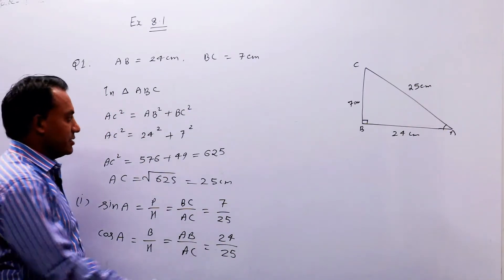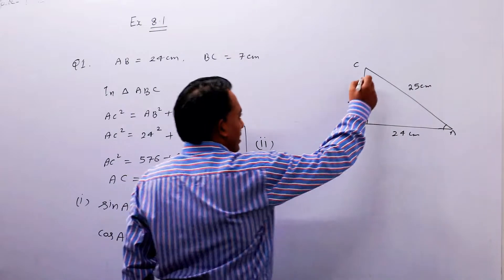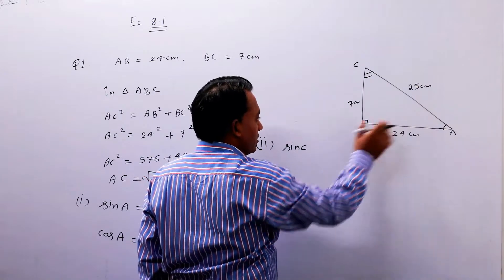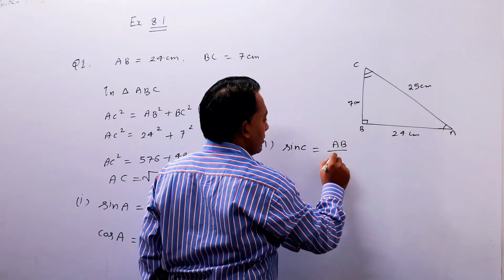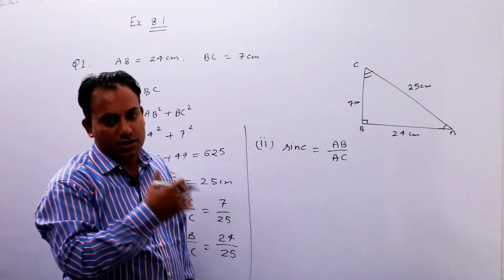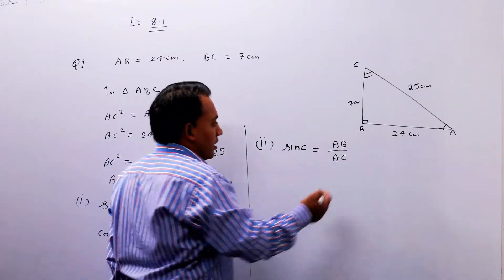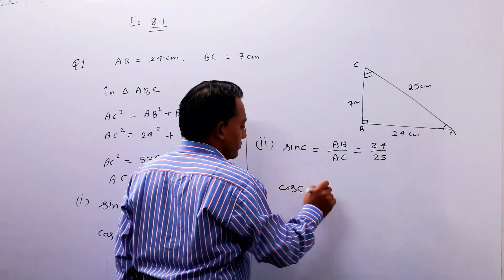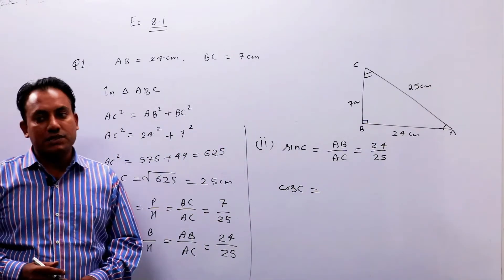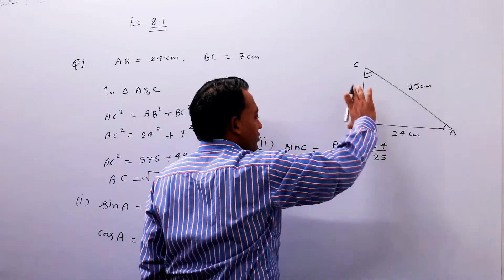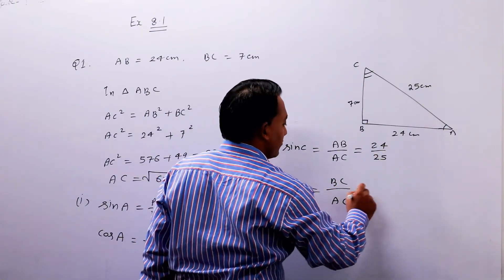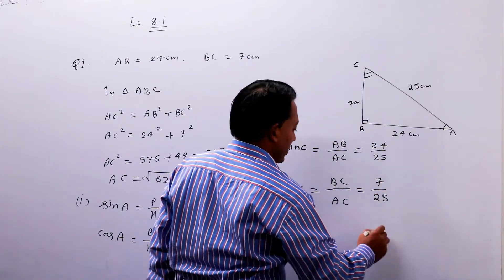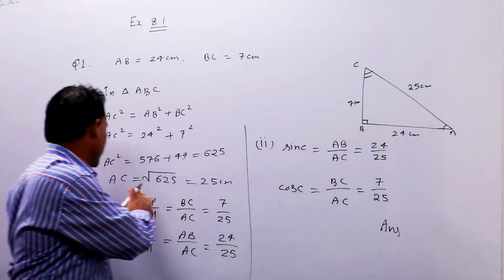अब second part देख लेते हैं — sin C और cos C बताना है। Angle C के लिए perpendicular change हो जाएगा। Sin C = AB/AC = perpendicular upon hypotenuse = 24/25। Cos C = base upon hypotenuse = BC/AC = 7/25। और यह हैं आपके answers — first part और second part।